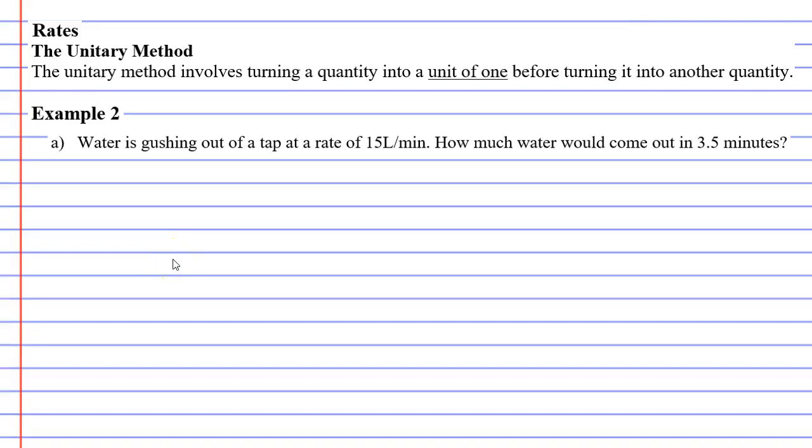In this video, we are going to complete rate problems using what is known as the unitary method. The unitary method involves turning a quantity into a unit of one before turning it into another quantity. The best way to explain this is to go right into the examples. We're going to go through four examples with a slide for each example.